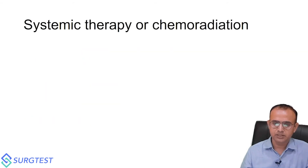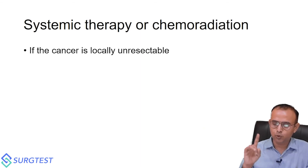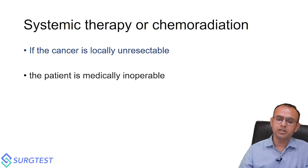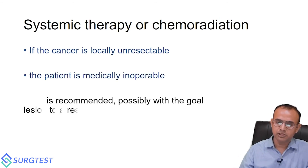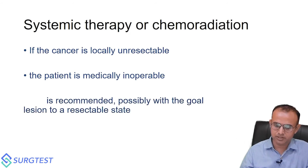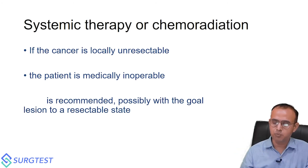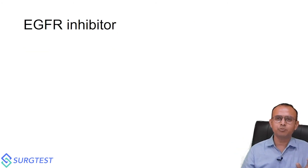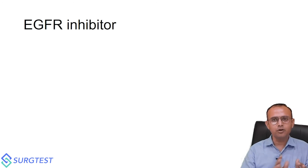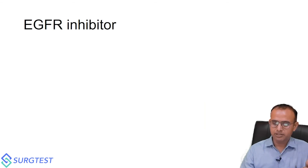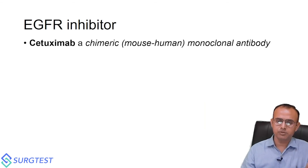Regarding systemic chemotherapy or chemoradiation: if a cancer is locally unresectable, radiation comes into consideration. If the patient is medically inoperable or has an unresectable tumor, chemoradiation is recommended with the goal of converting the lesion to a resectable stage. However, in colon cancer generally, chemoradiation does not play a major role.